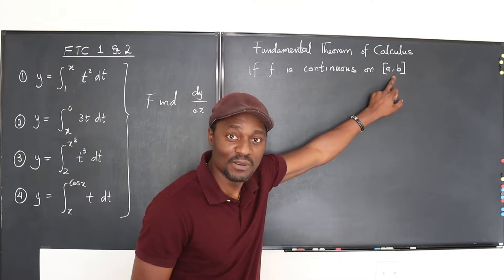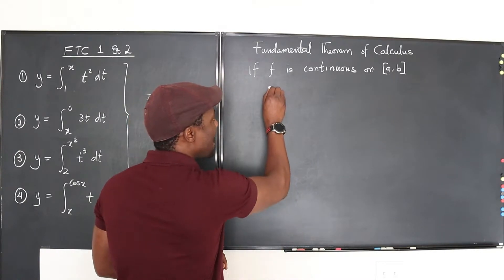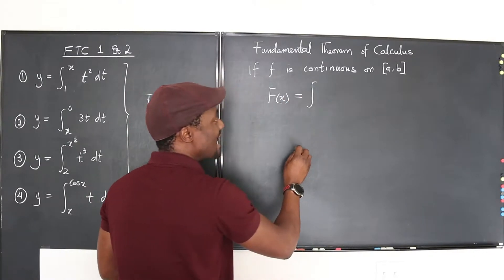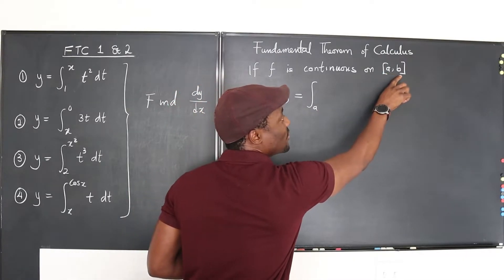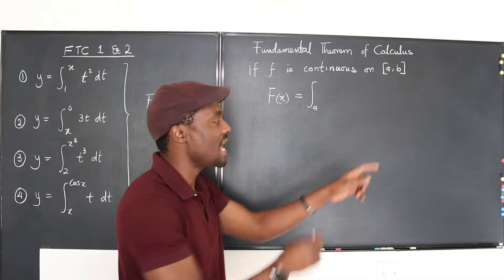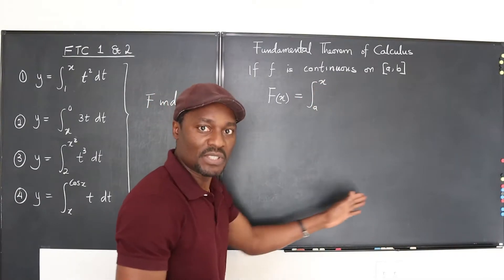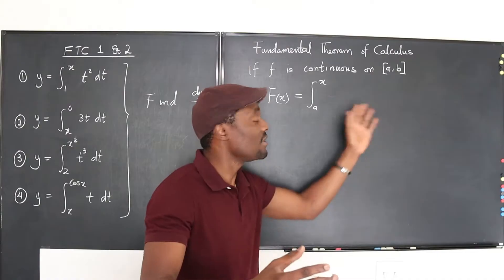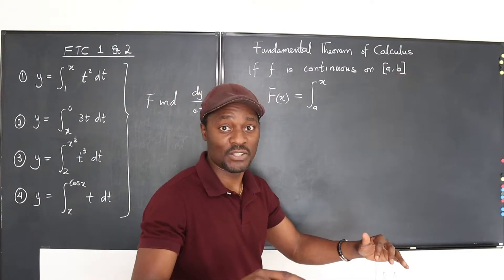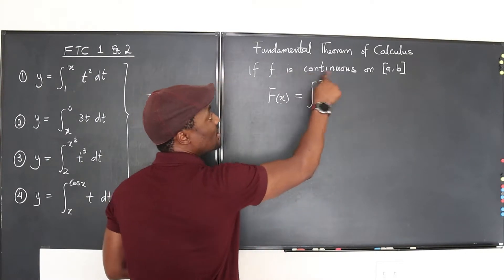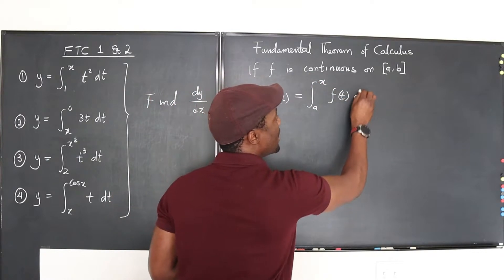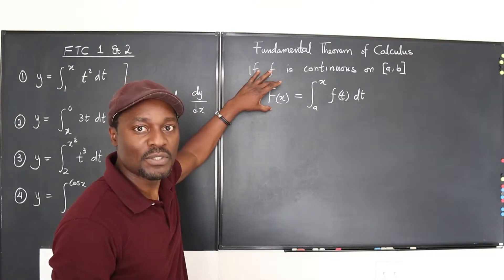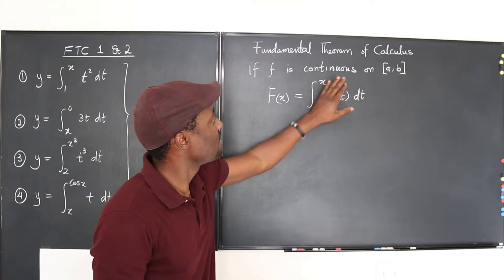So we're saying if f is continuous on this interval, then we can say that there is a function which we call F of x, defined as the integral from a — the beginning — along the path to b. So we're just saying any point you pick between a and b, which we just represent as x. Remember, a is a constant, b is a constant — that's the end of it. In between a and b it could be any value of x. Of a function — this function that is continuous over the interval — let's use t as the variable. If you integrate this with respect to t, we are saying that there is a function called capital F of x which you're going to get when you integrate this function over this interval.